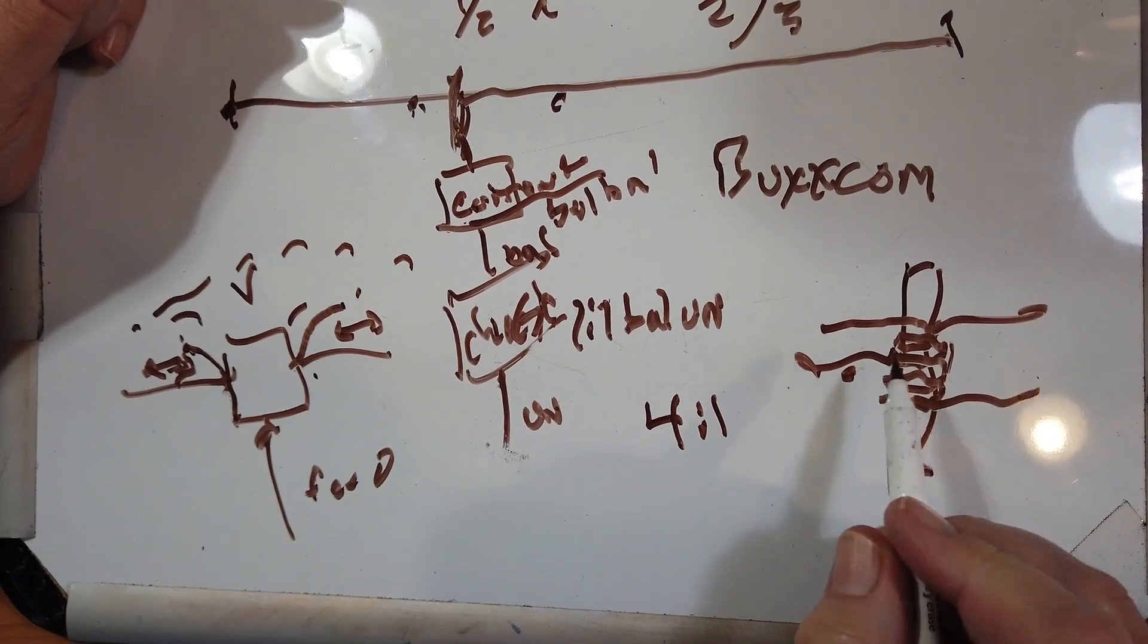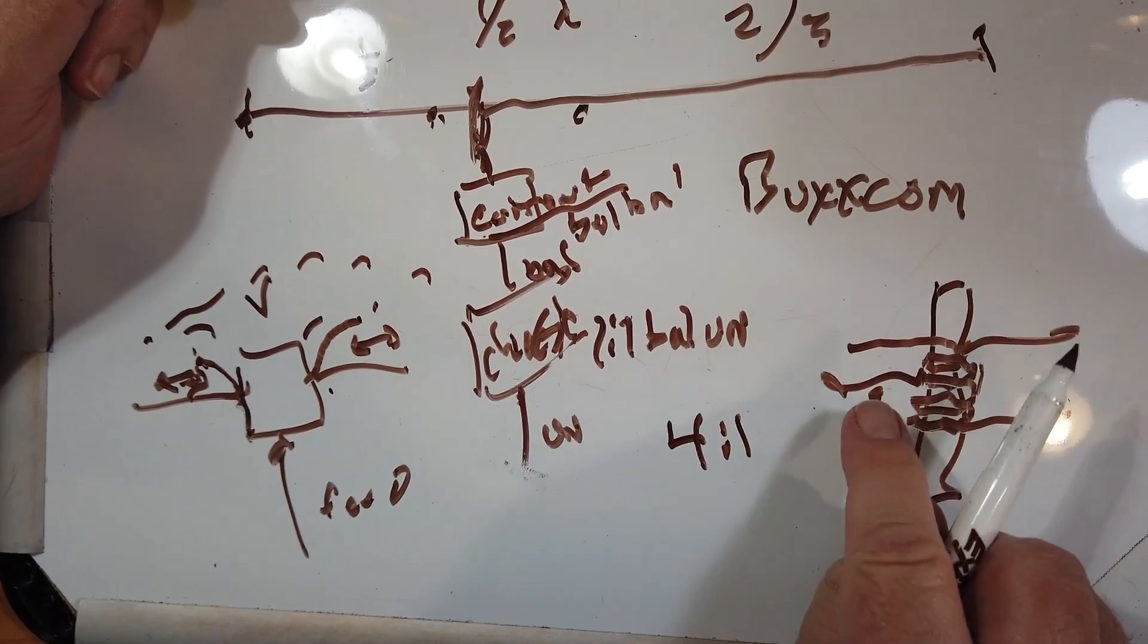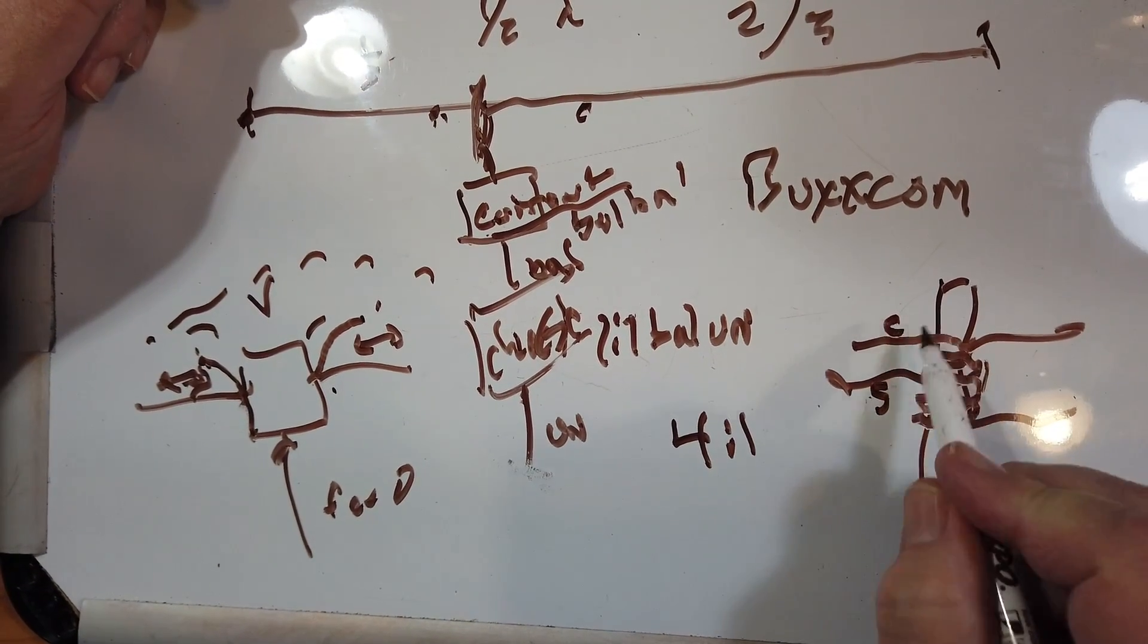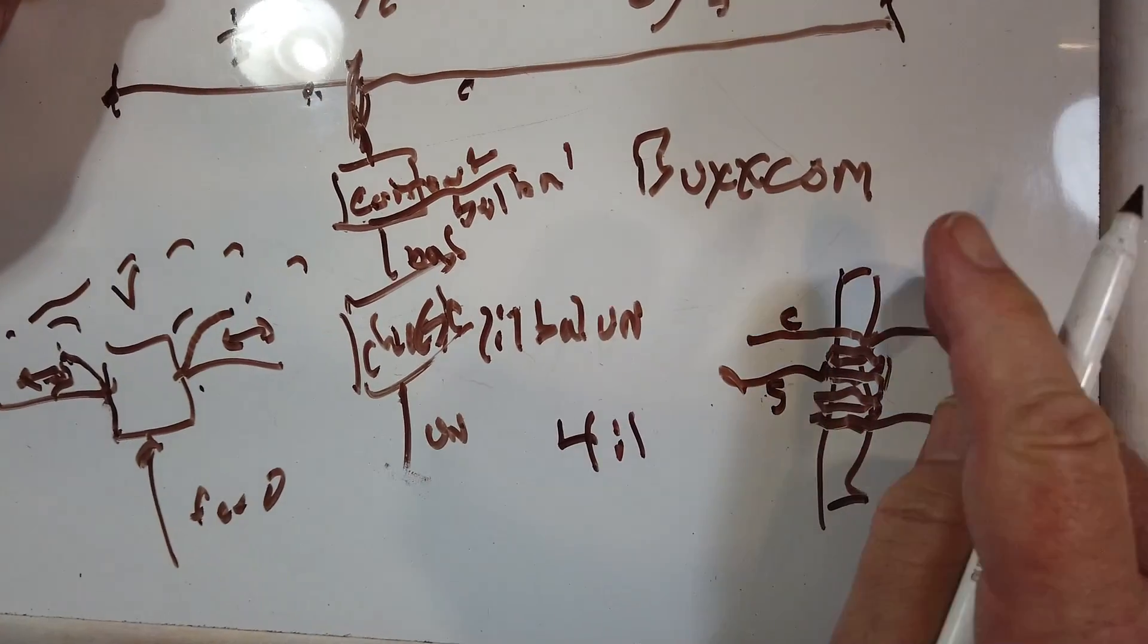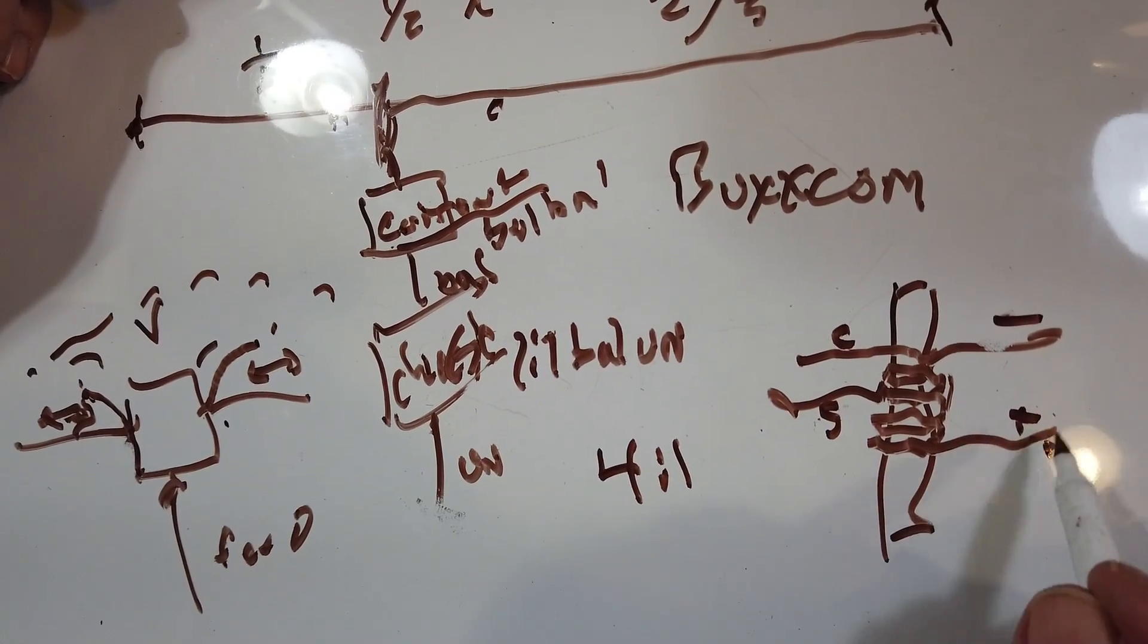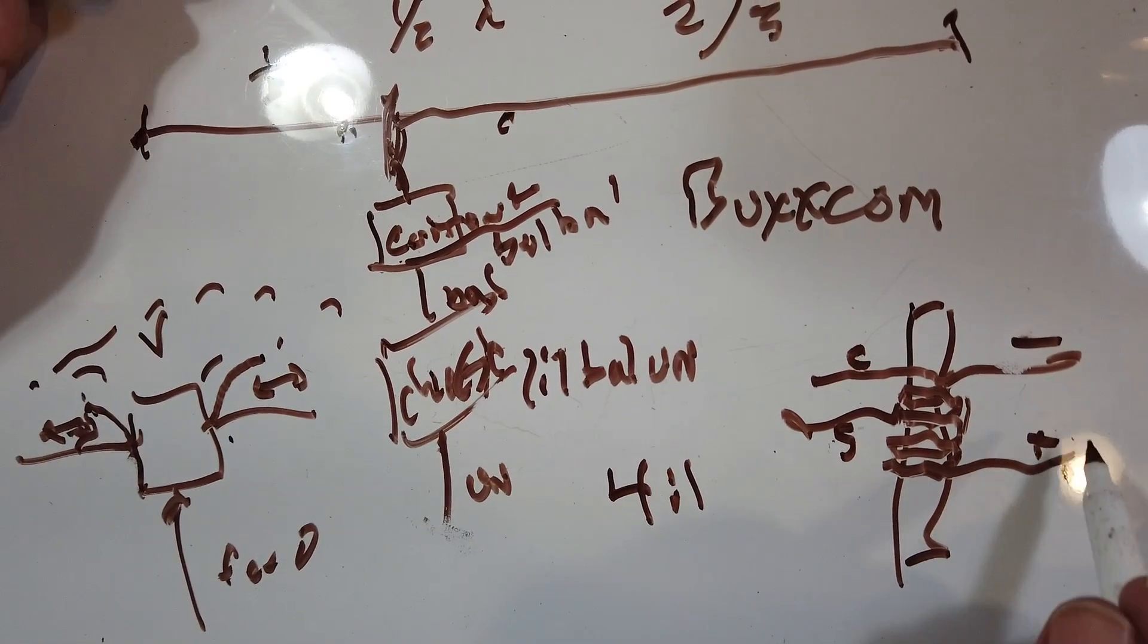So this is fed with the center conductor here. I'm sorry, the shield here. The center conductor here. And then this is called plus and minus. But this side over here is balanced. And it's a voltage balun.